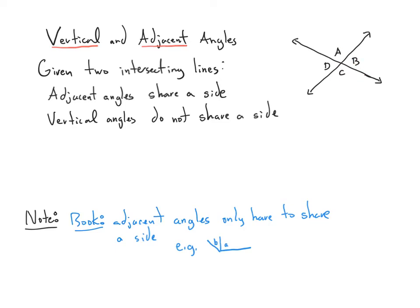So B is adjacent to A, and B is adjacent to C. Vertical angles are the angles in terms of intersecting lines across the X from each other — they do not share a side. So A and C are vertical, and B and D. Even though they're horizontal across the X, we still call them vertical angles.